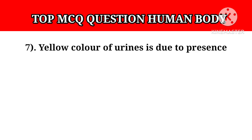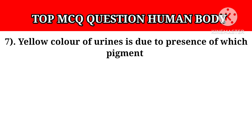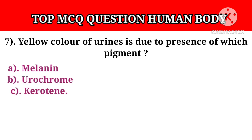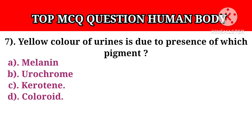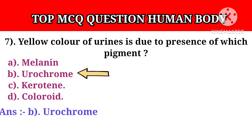Question number 7: Yellow color of urine is due to the presence of which pigment? Option A: Melanin. Option B: Eurochrome. Option C: Carotene. Option D: Coloroid. Answer B: Eurochrome.